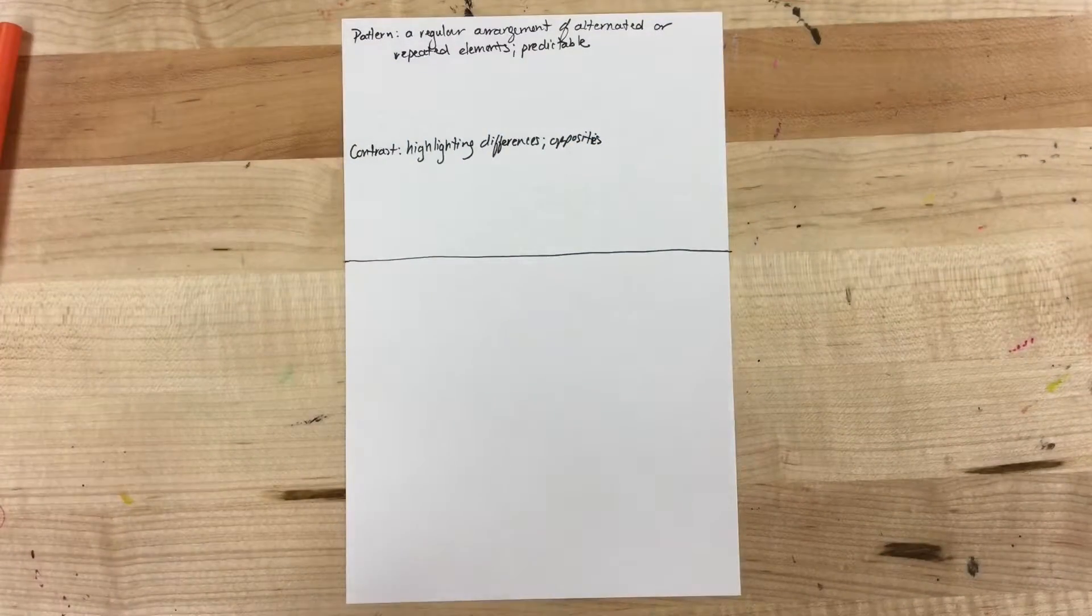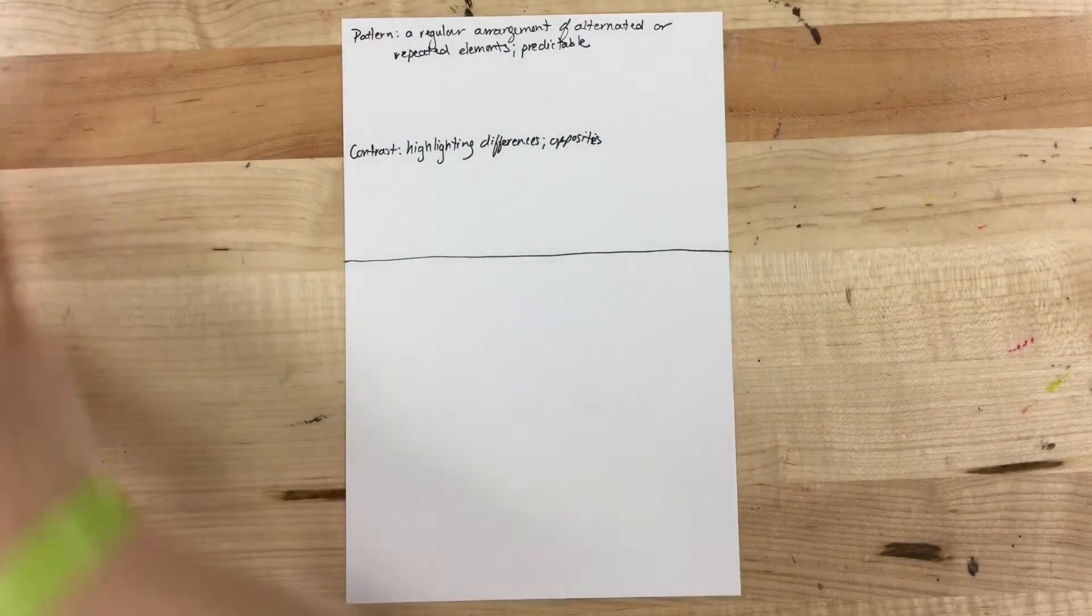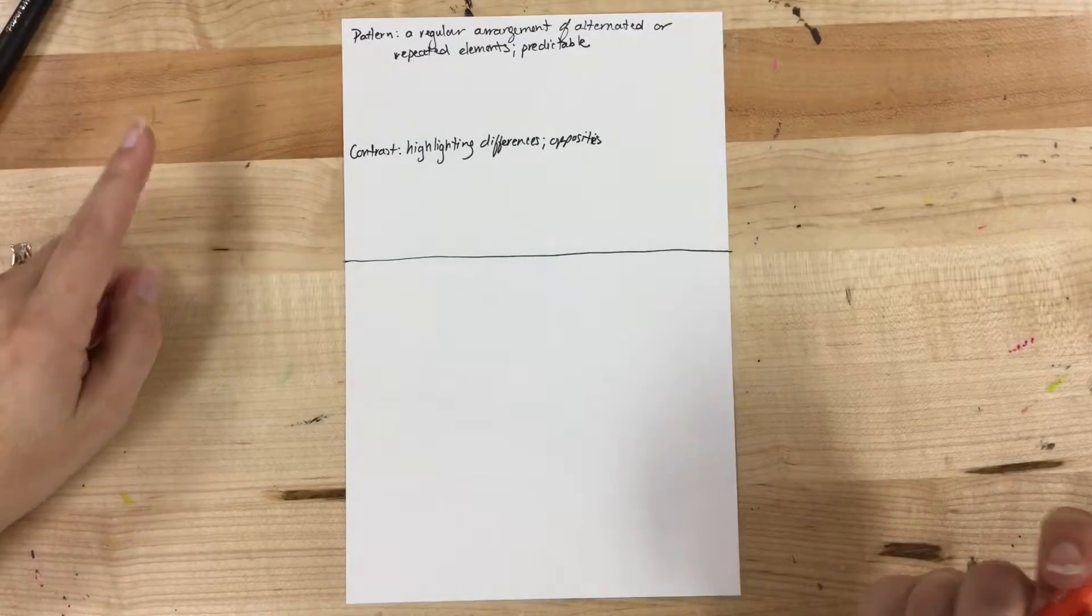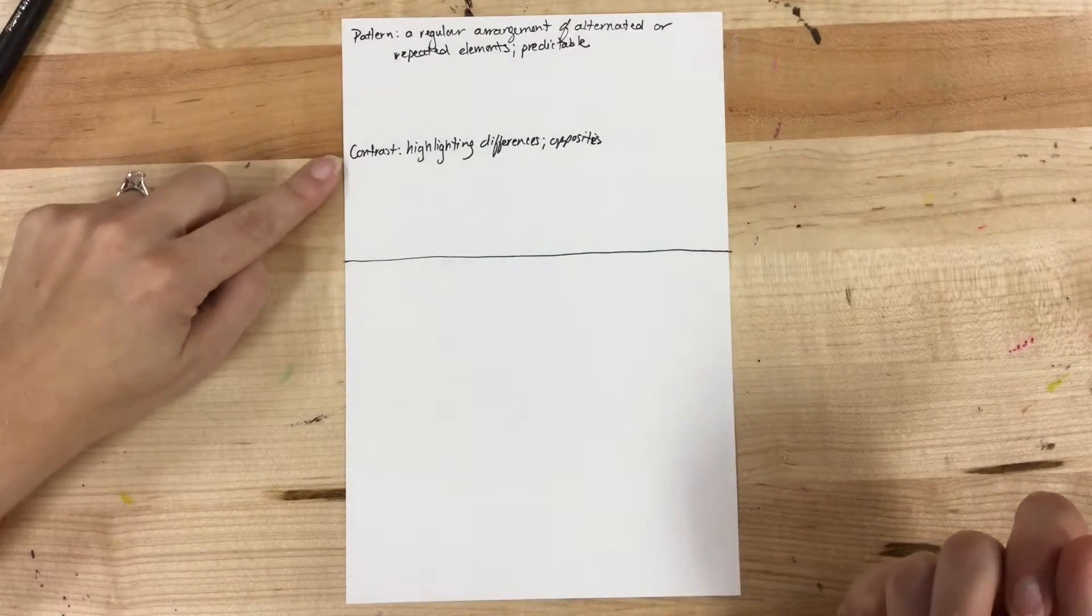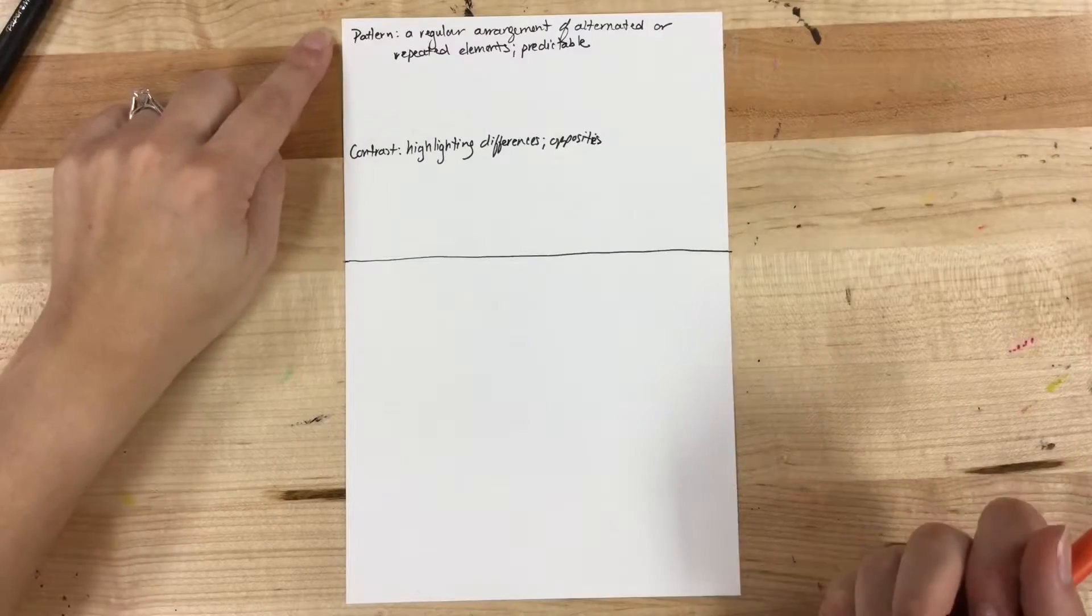Under each word, write describing words that you could use when talking about pattern or contrast. Pattern is a principle.